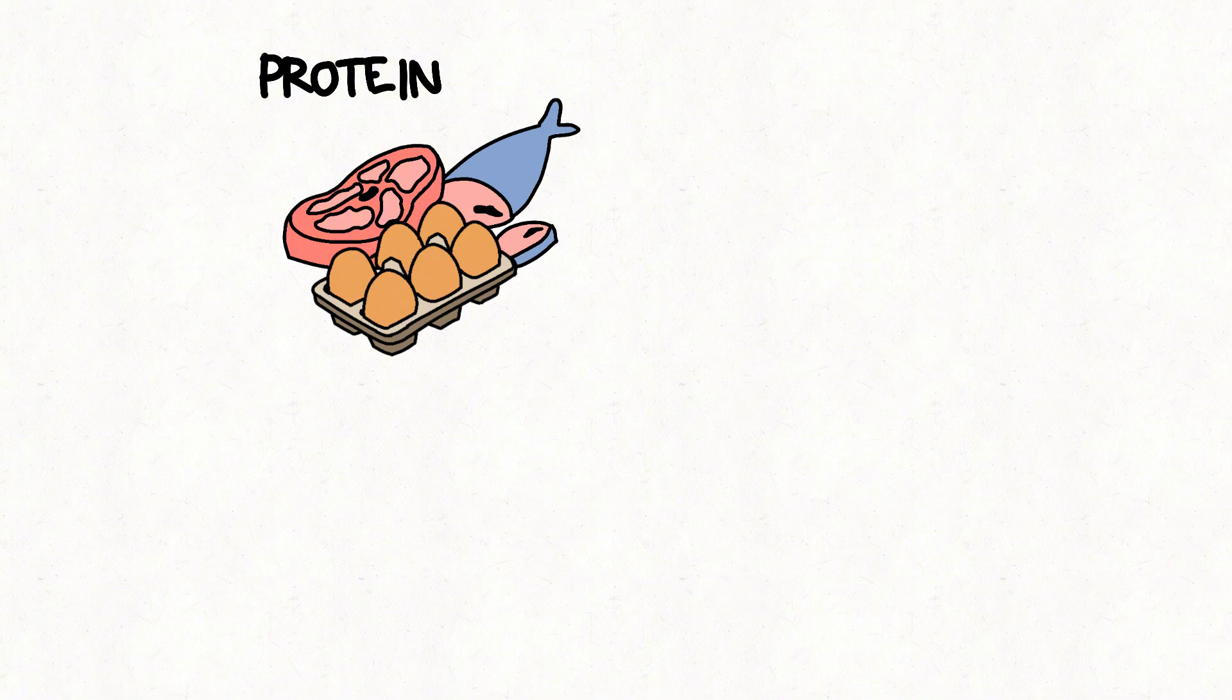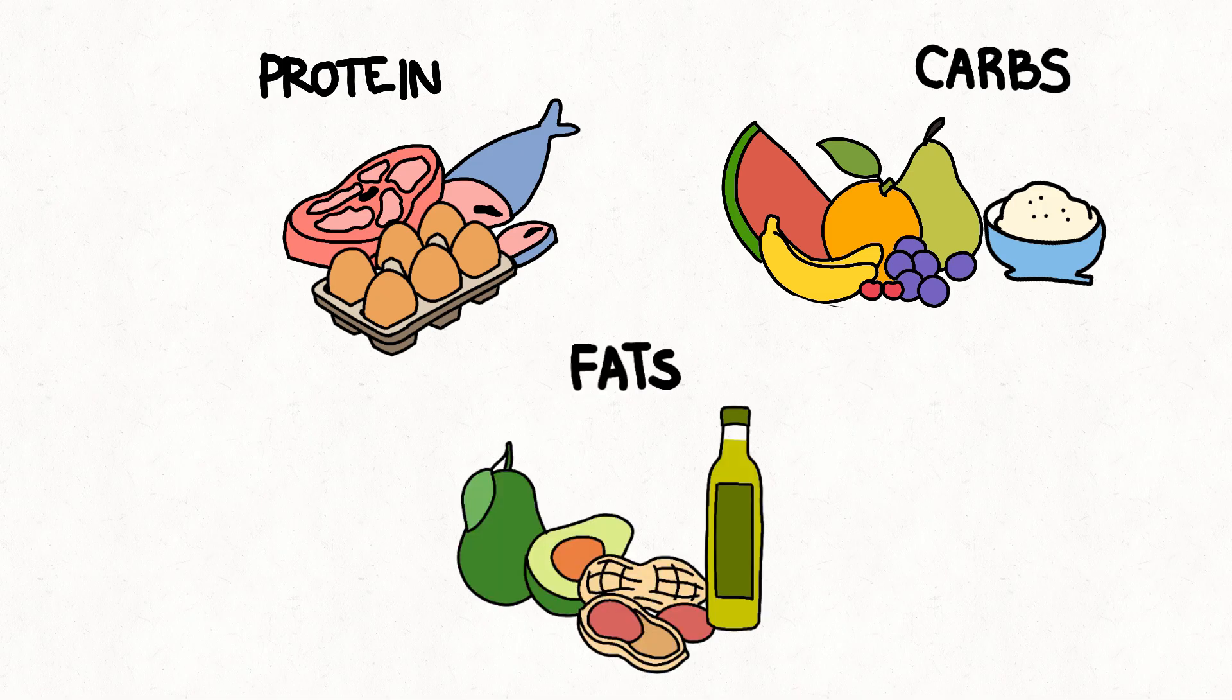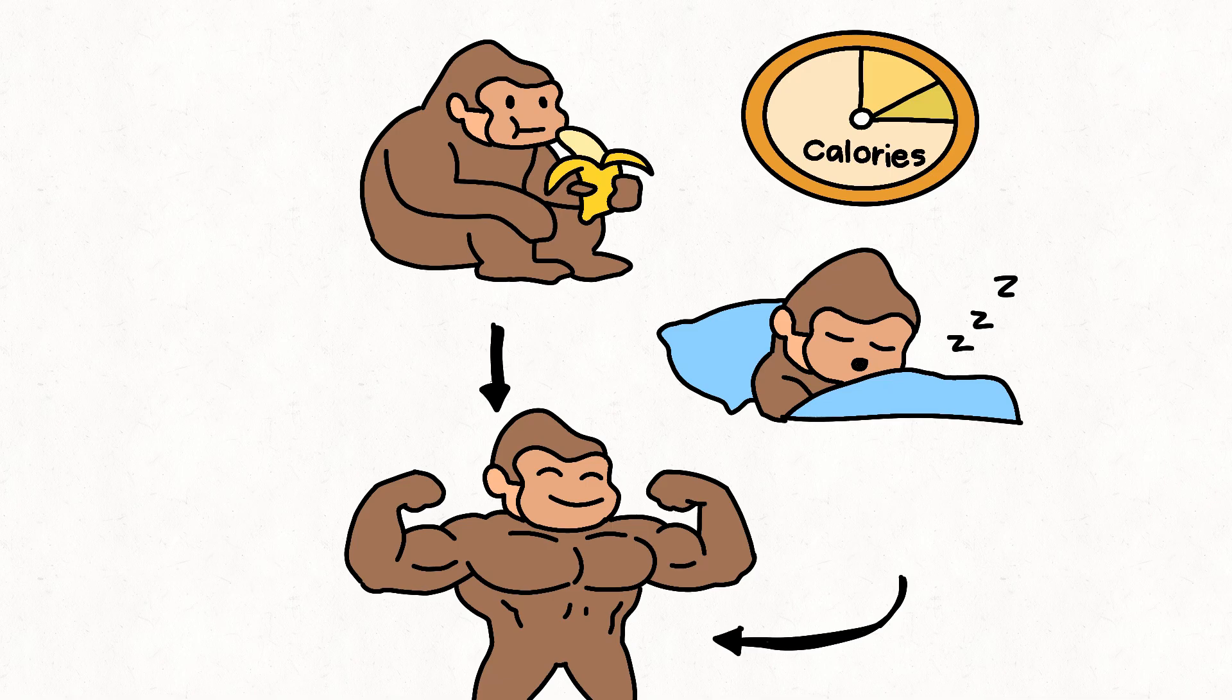Protein: chicken, eggs, fish, lean meat. Carbs: rice, oats, fruits, bananas. Fats: nuts, avocado, olive oil. Monkey stays in a small calorie surplus to build.